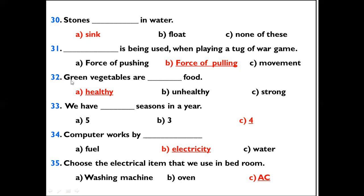Question 32: Green vegetables are dash food.